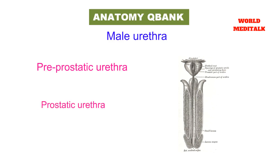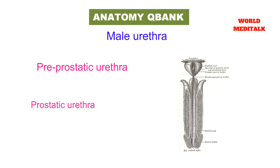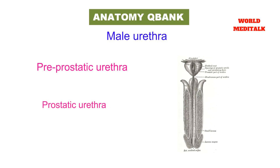The prostatic urethra is wider than the membranous urethra and contains several openings for the transmission of semen at the midpoint of the urethral crest.